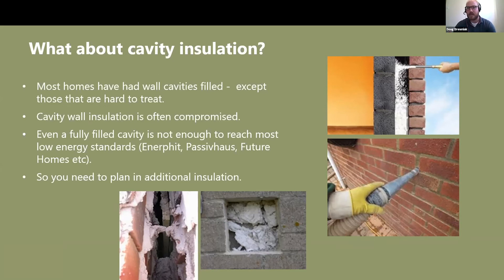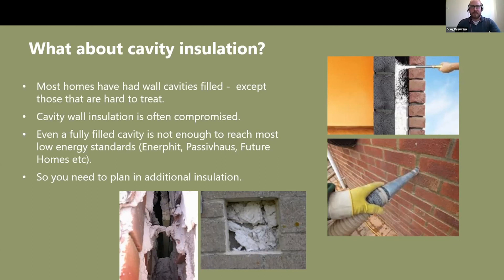Sometimes you get pockets where the wall isn't insulated. Depending on the type of material used, you sometimes get slump — the insulation gradually settles over time, opening up areas where you might get heat loss again. Even very well-done cavity wall insulation will probably need additional insulation to get you towards a net zero carbon home. Cavity wall insulation alone will not be enough to achieve that, so you will also need either external or internal wall insulation.